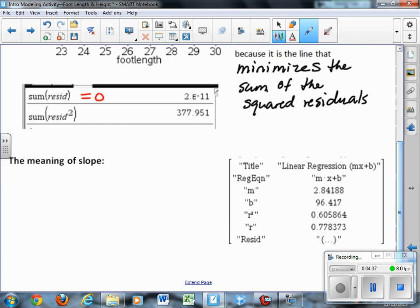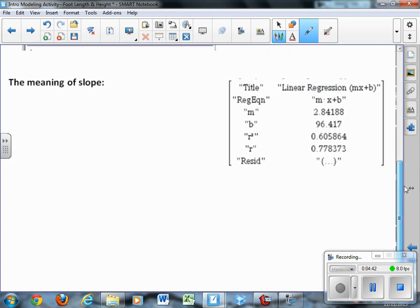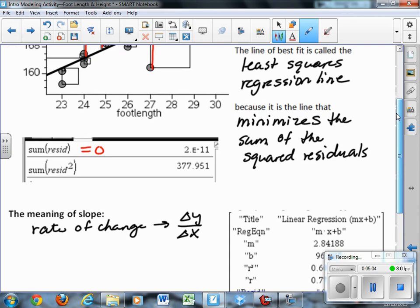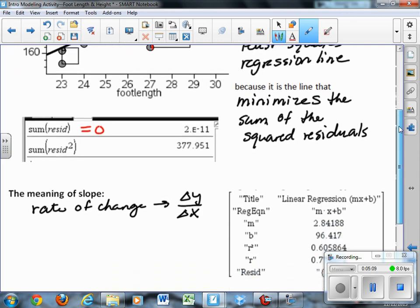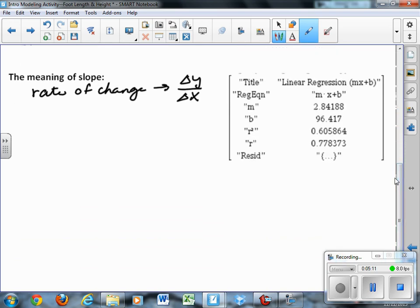The meaning of the slope, then, when you do a linear regression, it gives you slope and y-intercept and gives you some other things. We'll talk about in the next video what r means. But what does the meaning of the slope mean? What I want you to recognize is slope is a rate of change, specifically the change in y over the change in x.